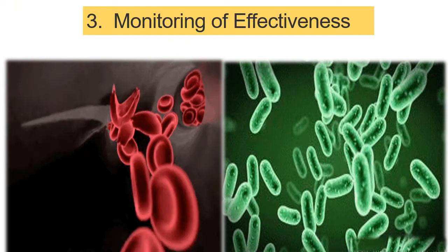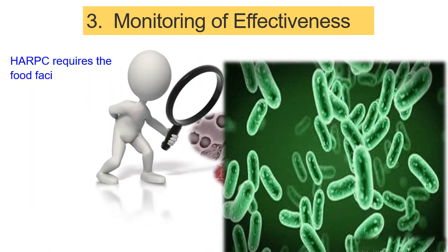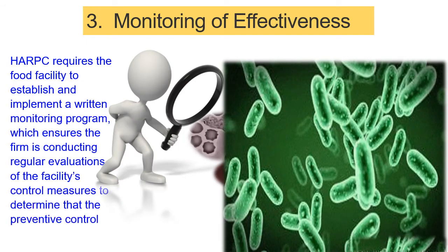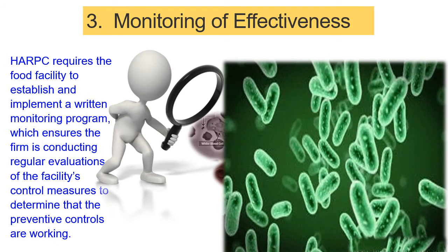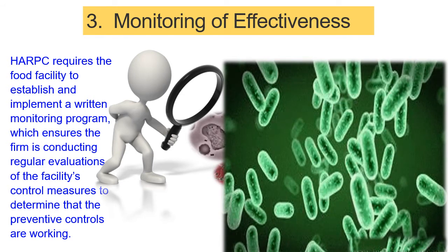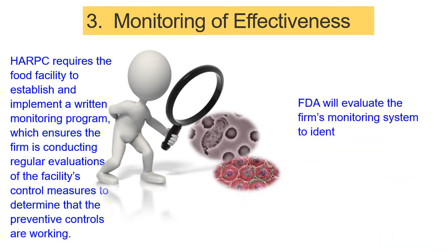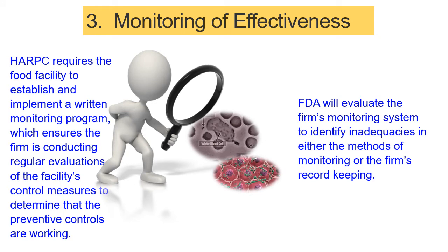Step 3: Monitoring of Effectiveness. HARPC requires the food facility to establish and implement a written monitoring program, which ensures the firm conducts regular evaluations of the facility's control measures to determine that the preventive controls are working. The FDA will evaluate the firm's monitoring system to identify inadequacies in either the methods of monitoring or the firm's record keeping.